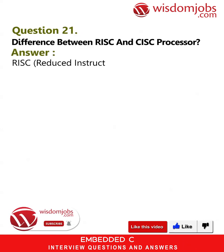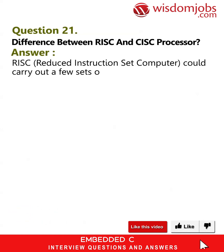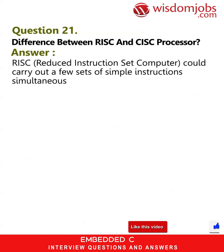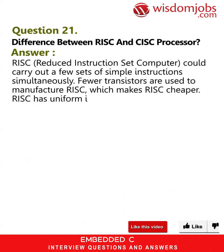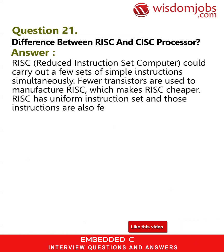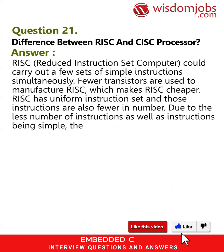Question 21: What is the difference between RISC and CISC processors? Answer: RISC (Reduced Instruction Set Computer) can carry out a few sets of simple instructions simultaneously. Fewer transistors are used to manufacture RISC, making it cheaper. RISC has a uniform instruction set and those instructions are fewer in number. Due to the fewer and simpler instructions, RISC computers are faster.